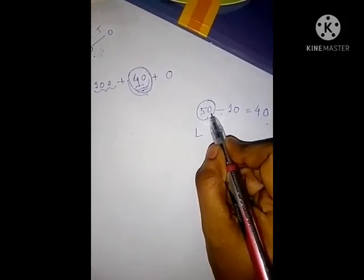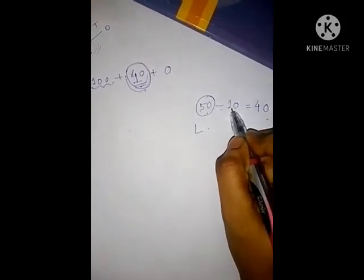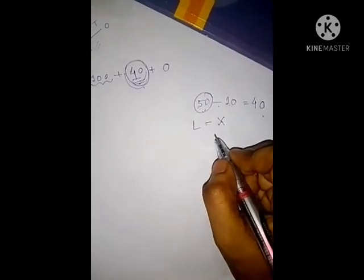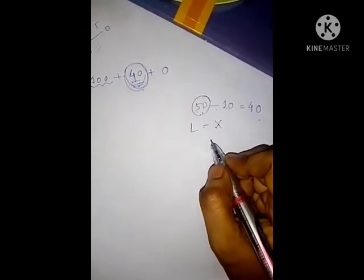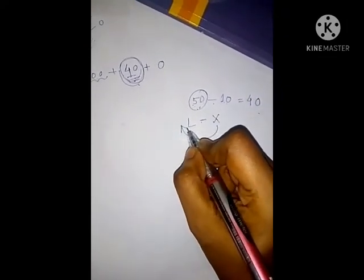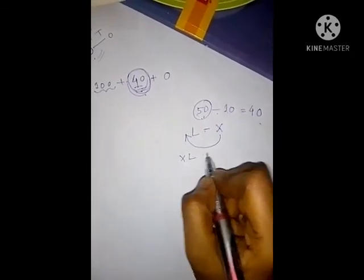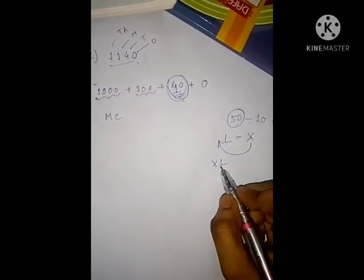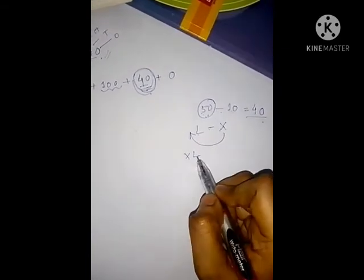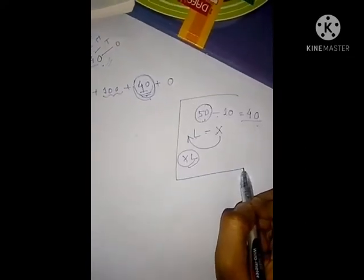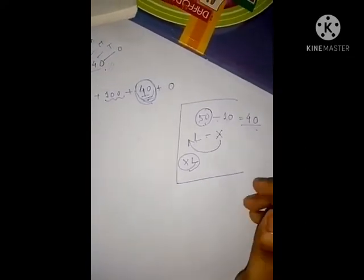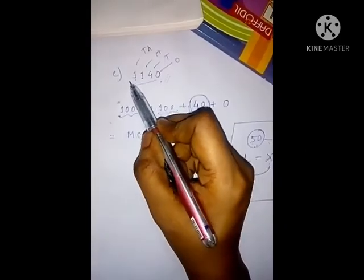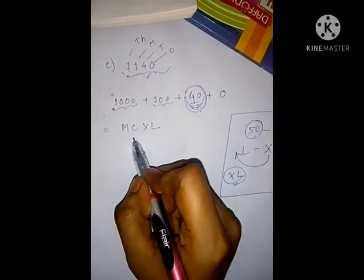The symbol of 50 is L and the symbol of 10 is X. According to Rule 4, we put X before L, so 40 is written as XL. Therefore the Roman numeral of this Hindu-Arabic number is MCXL.